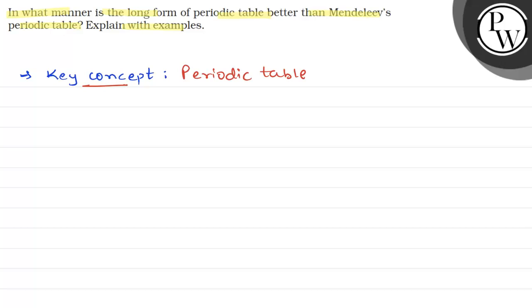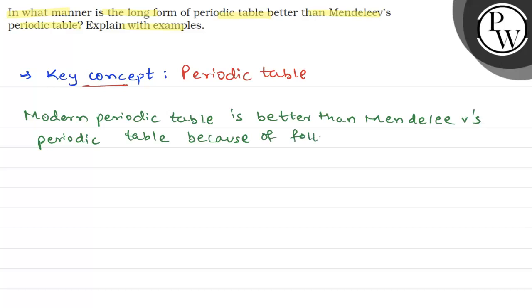Modern Periodic Table is better than Mendeleev's Periodic Table because of following merits.